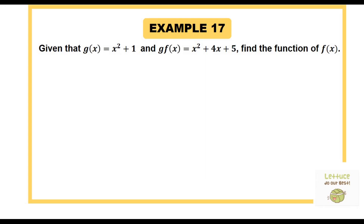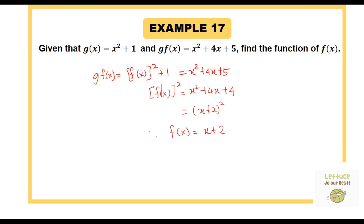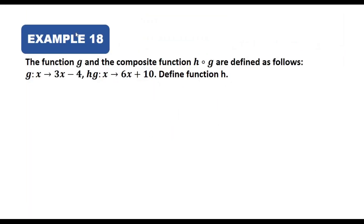Example 17: given g(x) = x² + 1 and g(f(x)) = x² + 4x + 5, find f(x). Substituting, f(x)² + 1 = x² + 4x + 5, so f(x)² = x² + 4x + 4. This factorizes as (x + 2)², so comparing both sides, f(x) = x + 2.